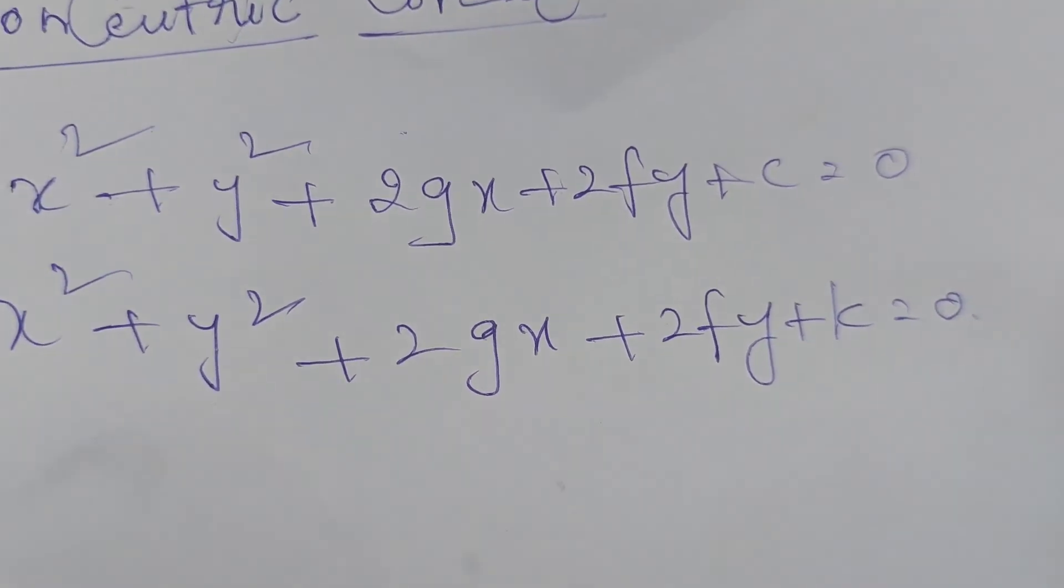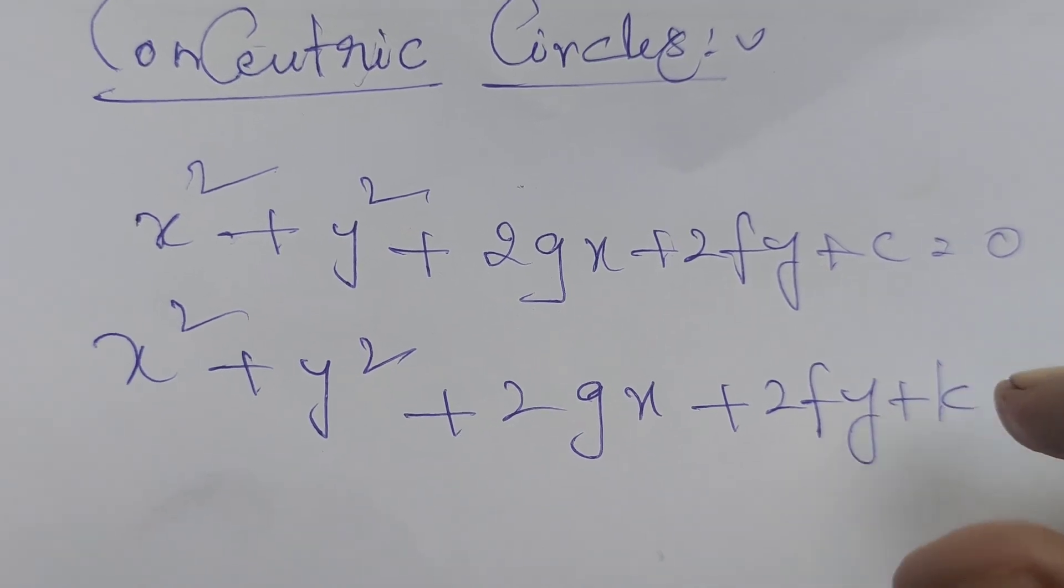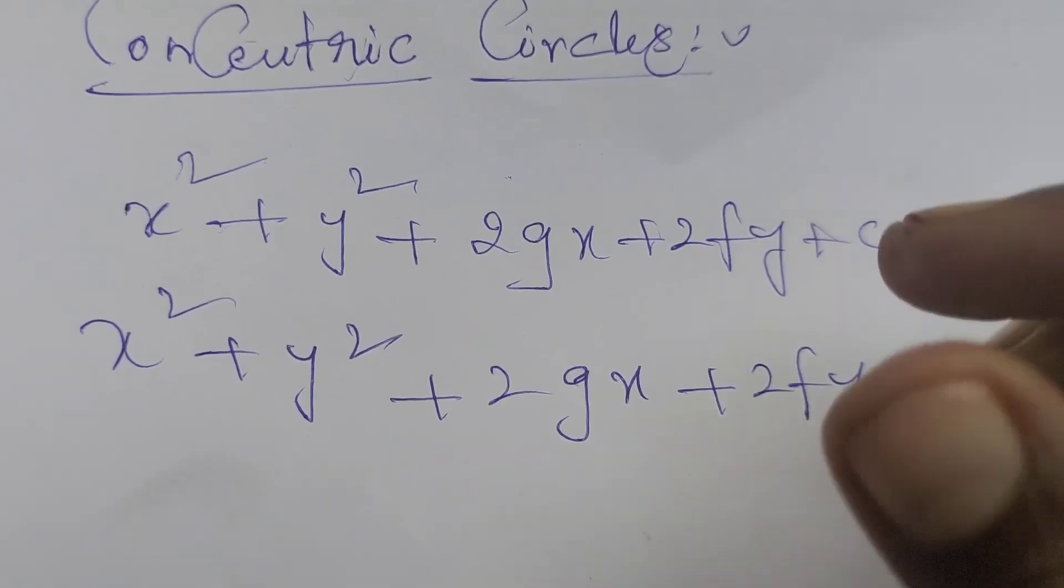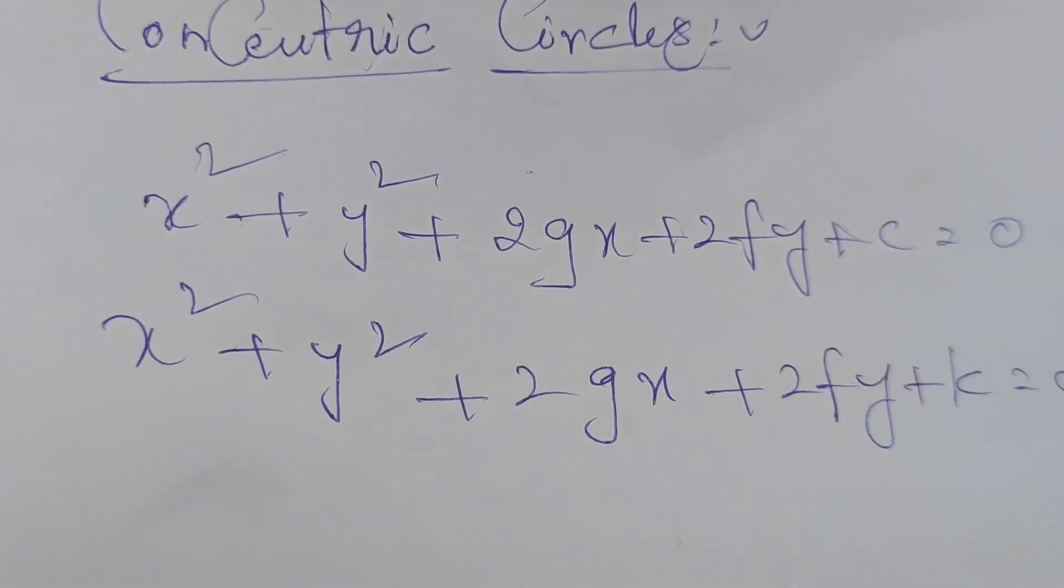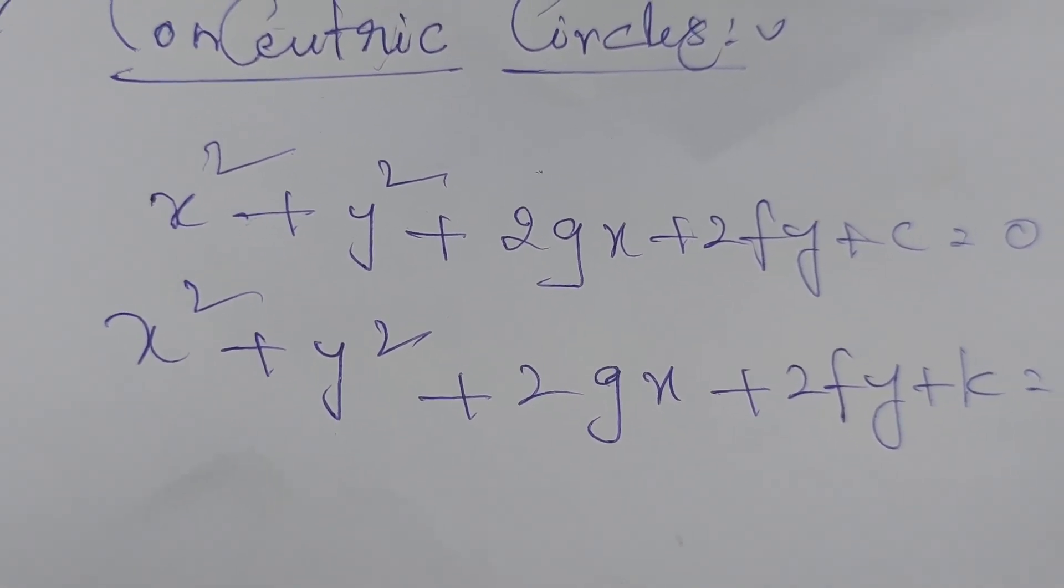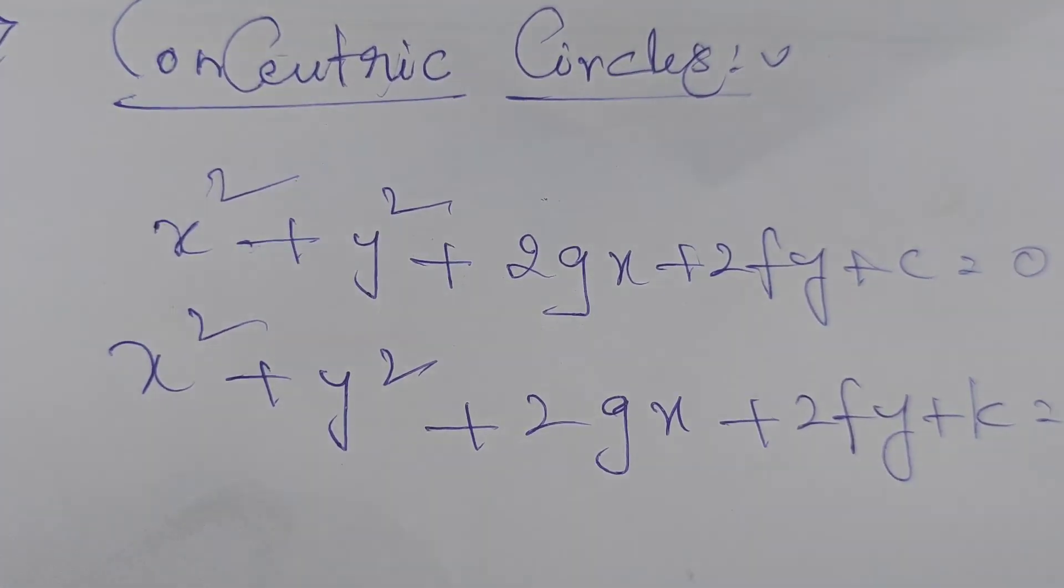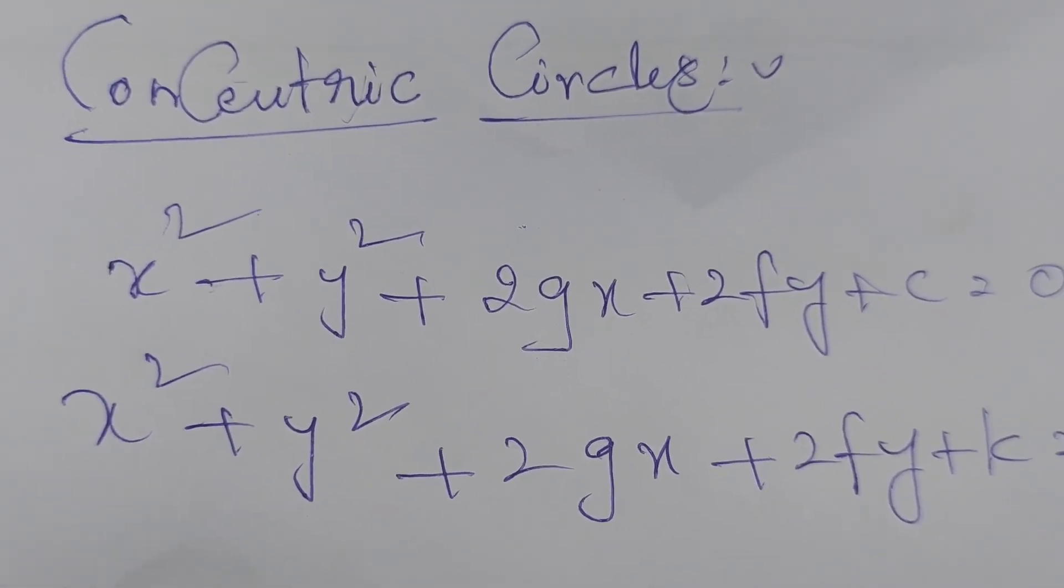In the concept of concentric circles, the concentric circles differ only in the constant. The given equations differ only in the constant term. Thank you.